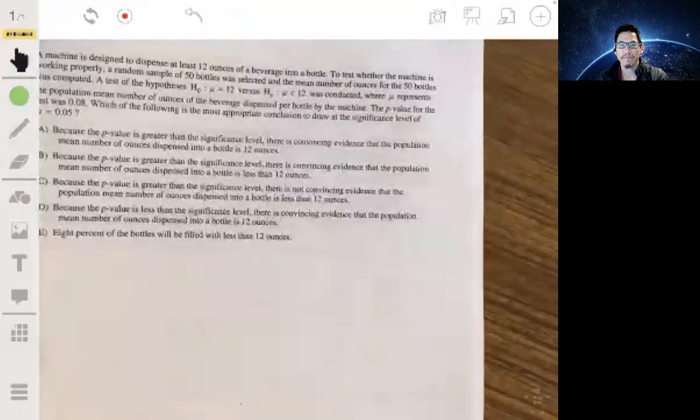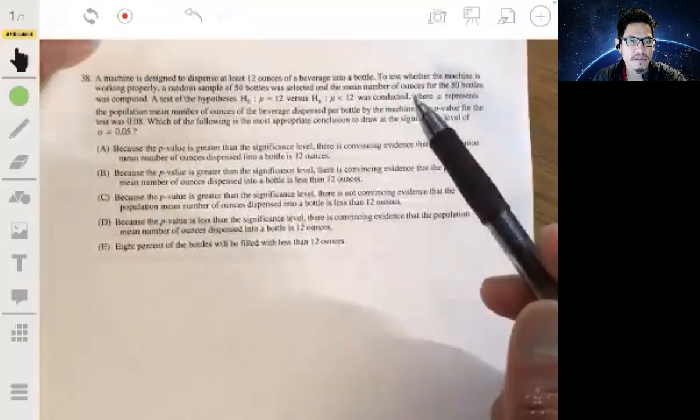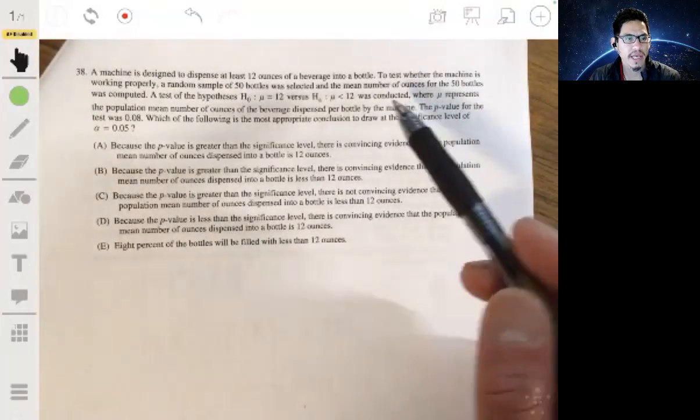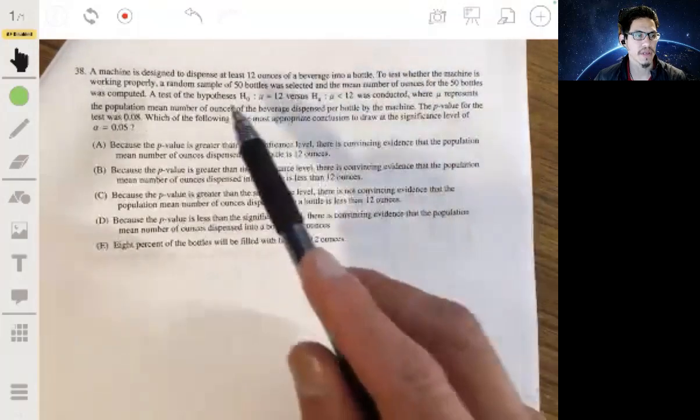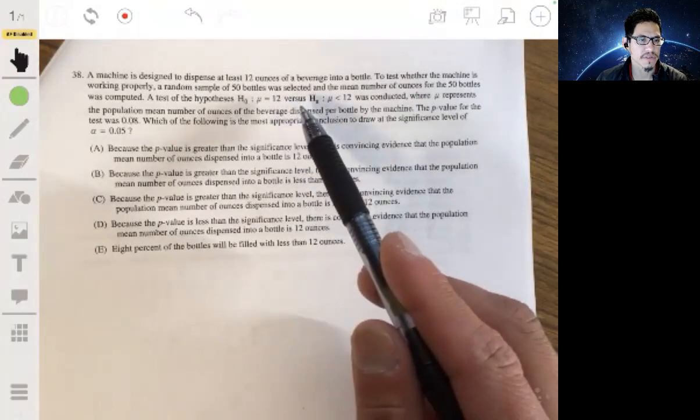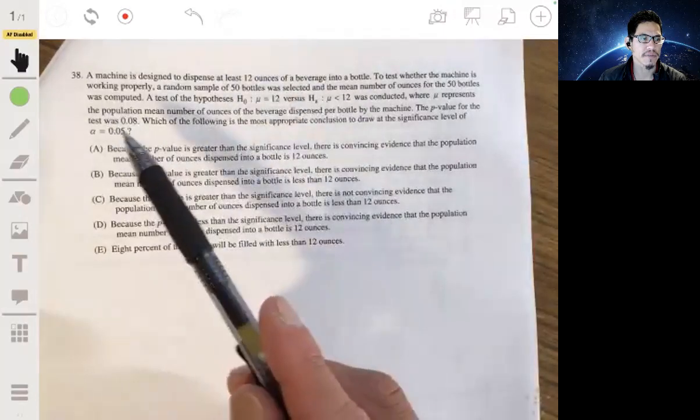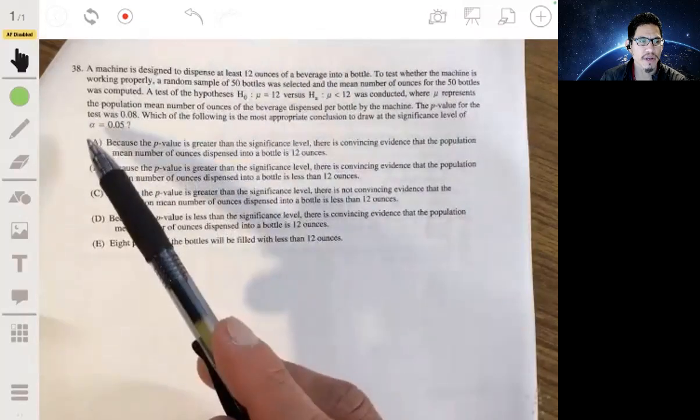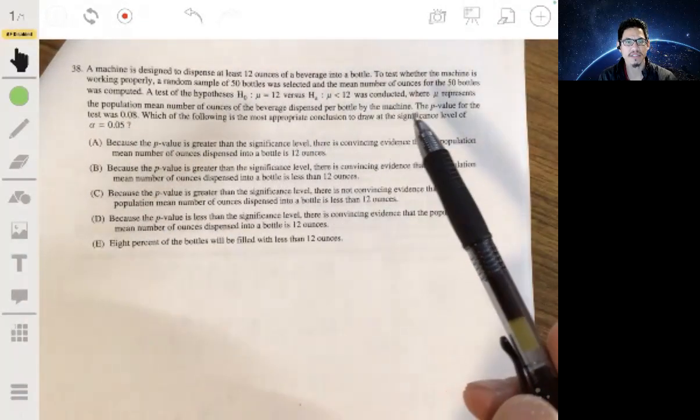And 38. The machine is designed to dispense at least 12 ounces of a beverage into a bottle. Test whether the machine is working properly. A random sample of 50 bottles was selected, and the mean number of ounces for the 50 bottles was computed. A test of the hypothesis, H0, where mu is 12, versus alternative, where mu is less than 12 was conducted, where mu represents the population mean number of ounces of the beverage dispensed per bottle by the machine. The P value for the test is 0.08. Which of the following is the most appropriate conclusion to draw the significance level of 0.05?